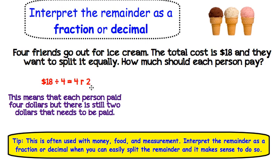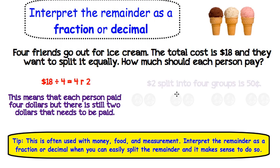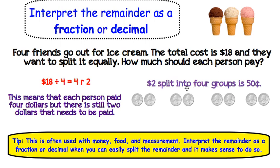What does that 2 mean? This means that each person paid $4, but there is still $2 that needs to be paid. So what are we going to do with that extra $2? If we want to split the bill equally, we are then going to have to split up that $2 between the 4 people. So, $2 split into 4 groups is $0.50.